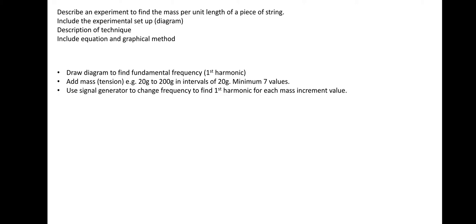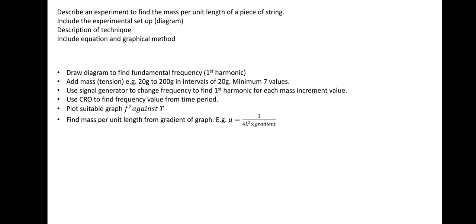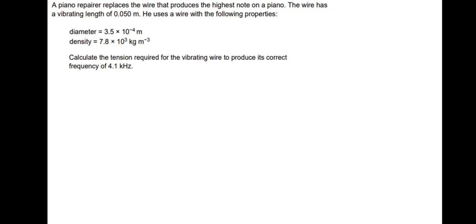Use a signal generator to change the frequency to find the first harmonic for each mass. So the signal generator will change the frequency, which is obviously connected to the CRO, the cathode ray oscilloscope. And we're going to use the cathode ray oscilloscope to find the frequency value from the time period. We did an example of that earlier. And plot a suitable graph. So the example I gave earlier was frequency squared against tension. And then find mass per unit length from the gradient. So you need to put it in the form Y equals MX plus C like I did earlier. And earlier on, we also got mass per unit length is one divided by four L squared times the gradient.